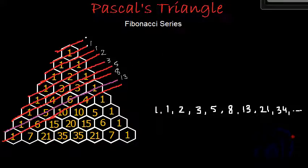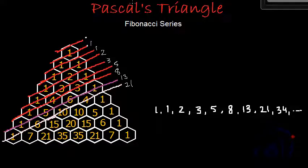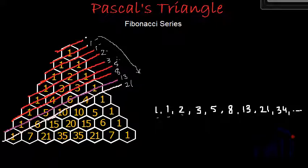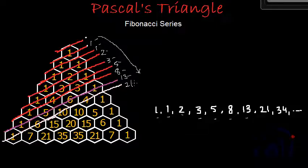And this last line goes through 1, 6, 10 and 4 — 1 plus 6 is 7, plus 10 is 17, plus 4 is 21. And what is this? This is nothing but the Fibonacci series. First term is 1, again 1, then 2, then 3, then 5, then 8, then 13, then 21. If we continue in this fashion, we are definitely going to find other terms of the Fibonacci series as well. So this is how we find the Fibonacci series in Pascal's triangle.